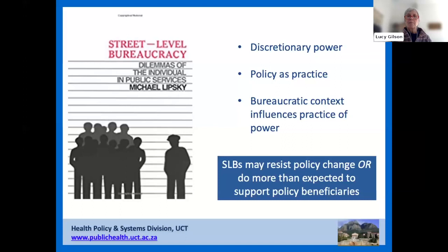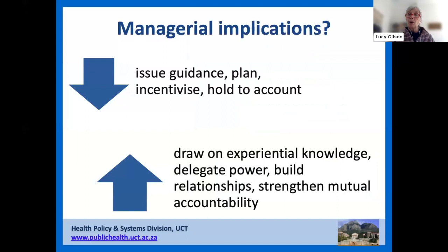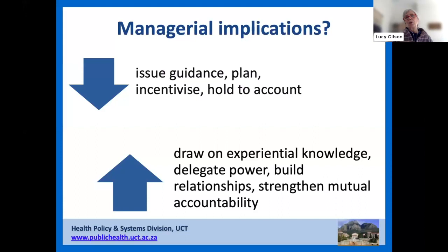What are the managerial implications of top-down and bottom-up theory? Top-down theory suggests we should issue guidance, plan, incentivize, and hold the front line to account. But bottom-up theory says it's important to recognize the experiential knowledge of those at the front line, draw on that knowledge as we develop and design policies, delegate power and acknowledge their power while creating frameworks within which they exercise it, build relationships amongst them, and ensure mutual accountability between the top and the bottom. We can learn from both sets of theory.